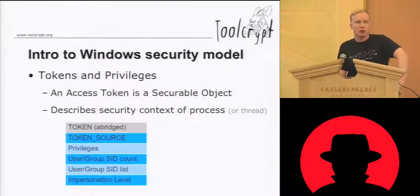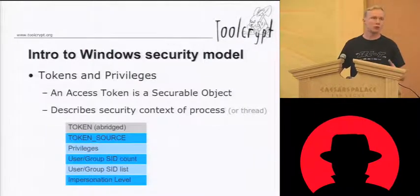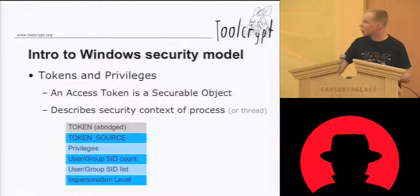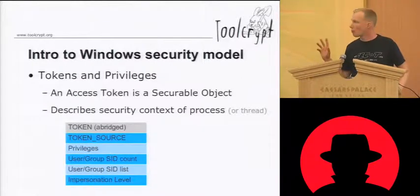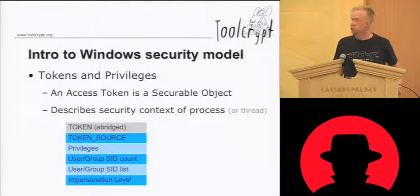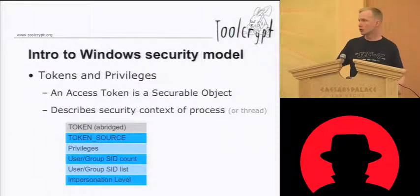Now, tokens. An access token is basically the data structure that contains all the security context information that's relevant to a particular thread or process. So when we say that a process is running as a specific user, what we really mean is that there's a specific SID in the primary token of that process. A token has loads of fields — one is a list of privileges, and there's a list of users and groups. So if I'm logged in as a standard user, that list would contain my unique user identity in the form of a SID, and it would probably contain the SID of the standard users group or the domain users group or something like that.